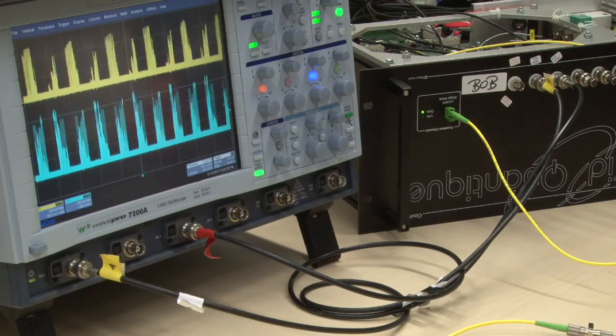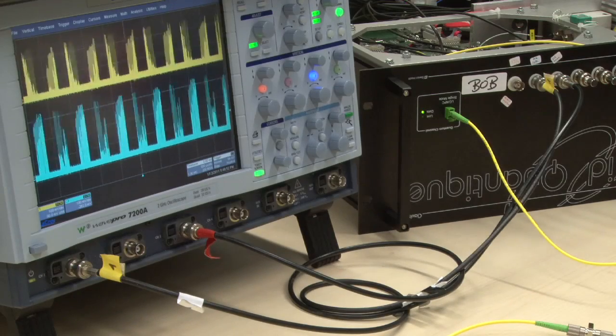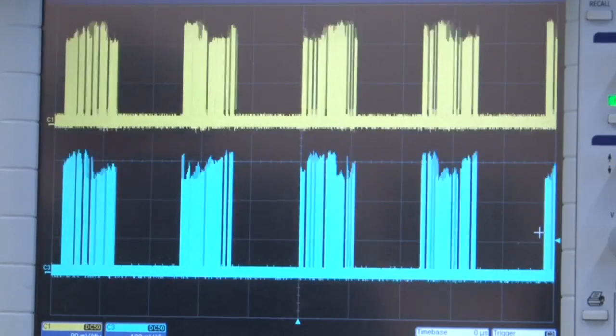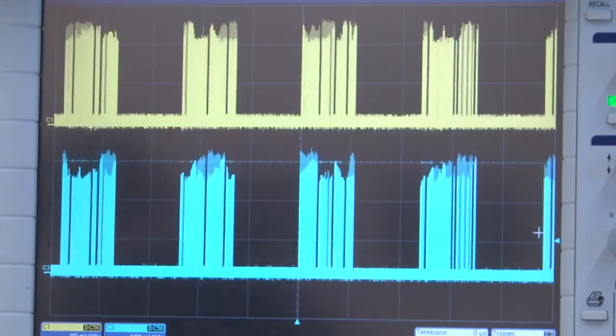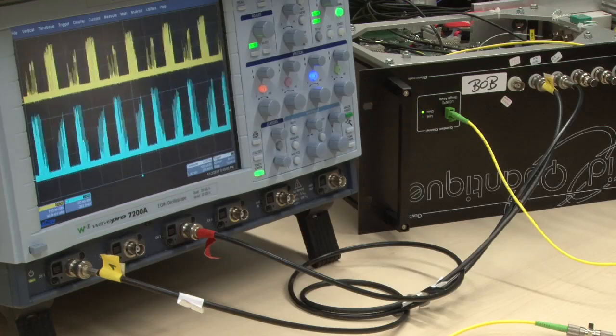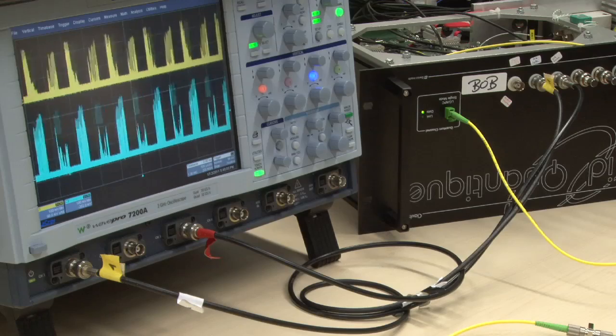The outputs from these electronic taps are now observed on the oscilloscope. What you see are the gate pulses applied to the two detectors. This tells us when the detectors in Bob are active. What we also see is that Alice and Bob communicate in frames of about a thousand pulses.